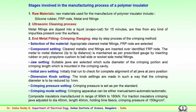Cleaned metallic fittings are inserted into identified fiberglass rods of known dimensions and length. The metal-to-metal distance — also known as lip-to-lip distance — is maintained as per the prescribed gauge by inserting rubber or polypropylene cushion to ball side or socket side metal fittings, to ensure damage is not caused during crimping. Jaw settings are done using suitable jaws selected according to the diameter of the crimping portion and the crimping length mounted on the crimping cavity.